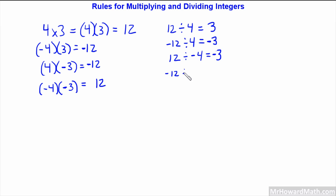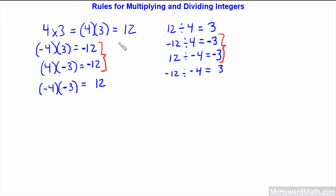Now let's do negative 12 divided by negative 4. 12 divided by 4 will always be 3. Apply the sign — there are two negatives, so this is positive. So what are you seeing here? I hope you are seeing that certain results are negative, and others — positive 4 times positive 3, negative 4 times negative 3, positive 12 divided by positive 4, and negative 12 divided by negative 4 — are all positive.